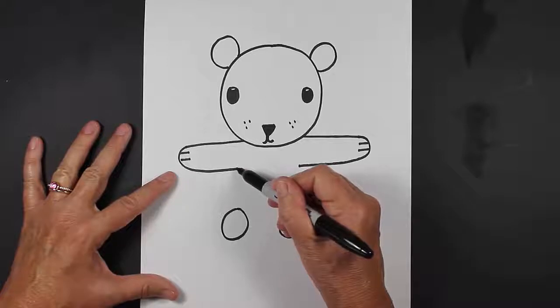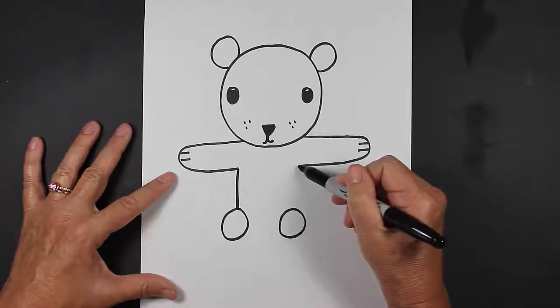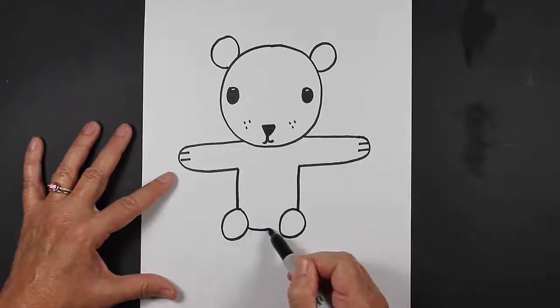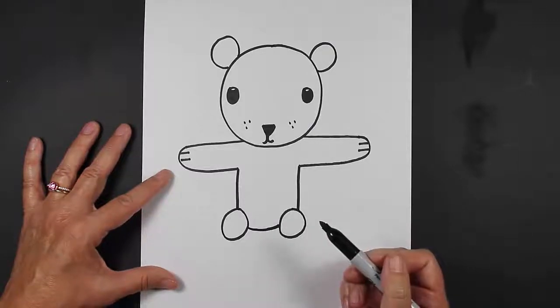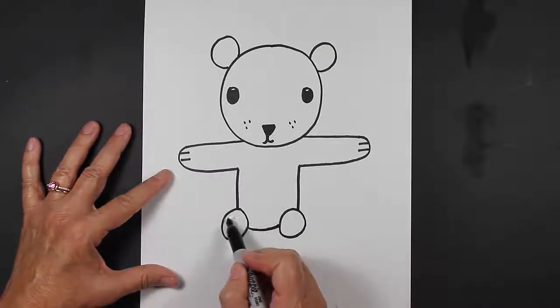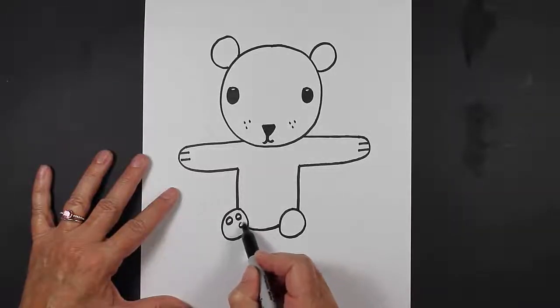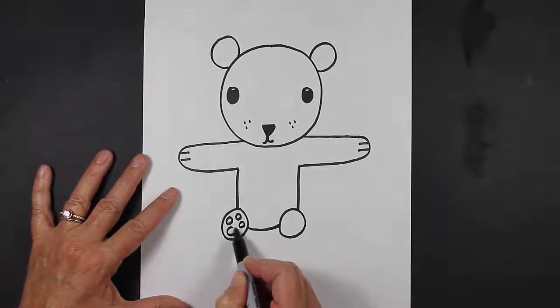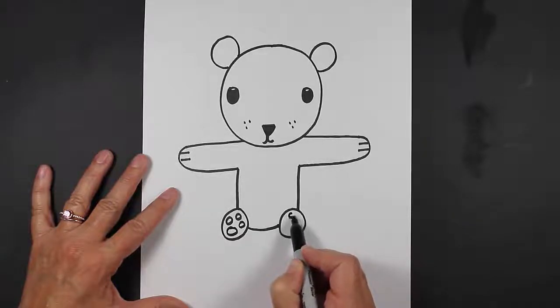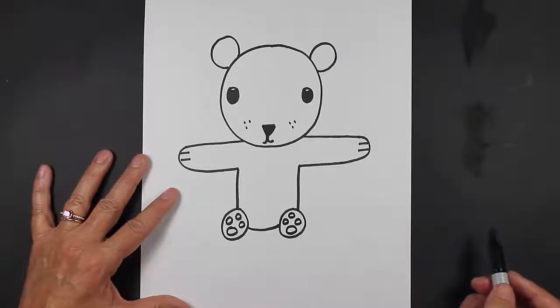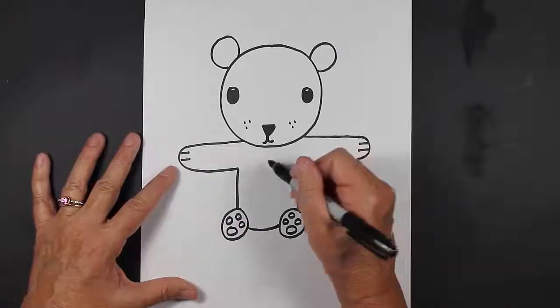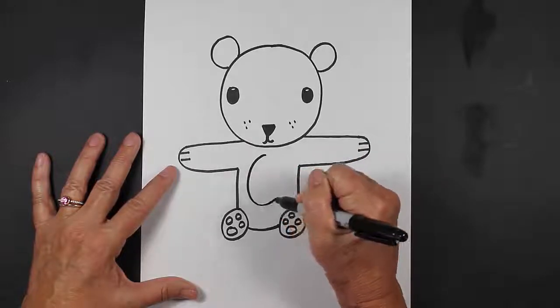So now we can come down and we can come down. And then we can close up at the bottom. See how that works? So now let's put some little pads. So we'll make two small circles and one larger circle. Three small circles and then one larger circle. And then for our teddy bear's tummy, let's make an oval shape.